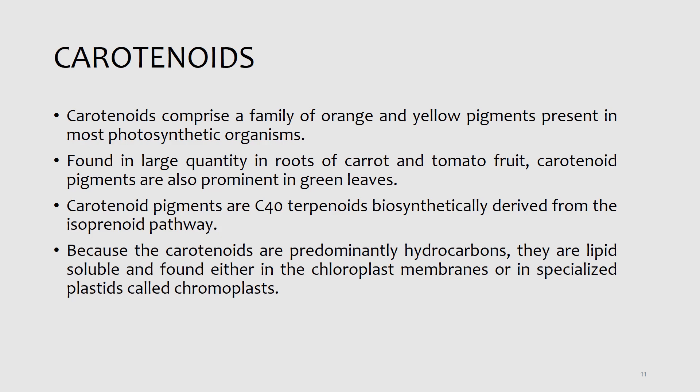Carotenoids are C40 terpenoids, because biosynthetically they are derived from the isoprenoid pathway. The carotenoids are predominantly hydrocarbons and are lipid soluble. They are found either in the chloroplast membrane or in specialized plastids known as chromoplasts. In chromoplasts, the concentration of the pigment may reach very high levels to the extent that the pigment actually forms crystals.